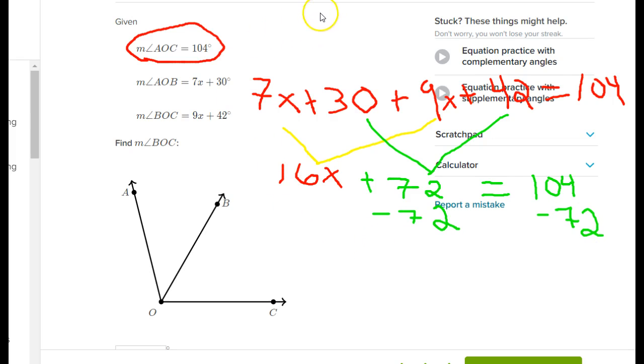After I do that, I find the 16x's are all alone now on this side, and over here, add 72, take away 72, that just goes away. Over here, 104 minus 72 is equal to 32.